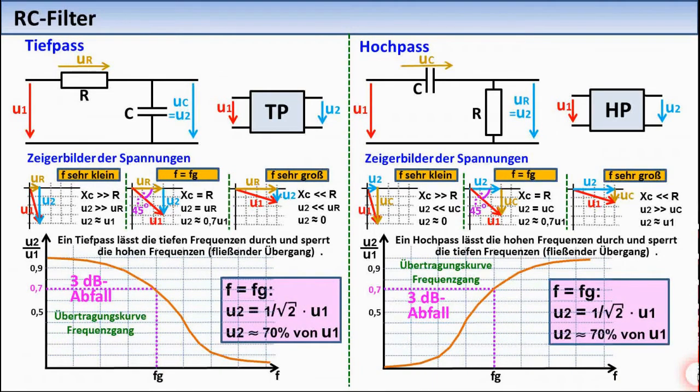The output voltage of the filter then has a value that is only about 70% of the input voltage. This value results from applying the Pythagorean theorem to the isosceles right triangle of U1, UR and UC.